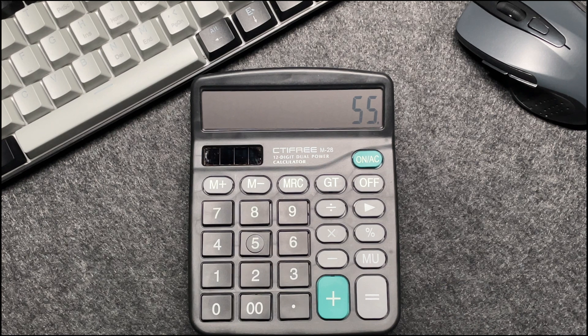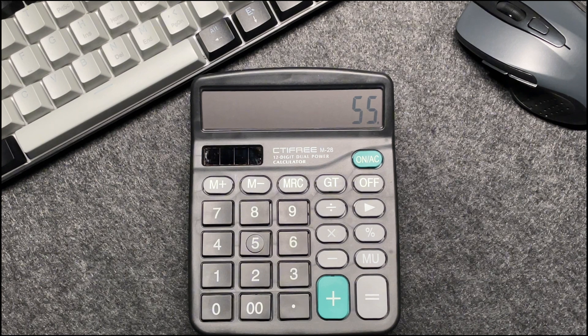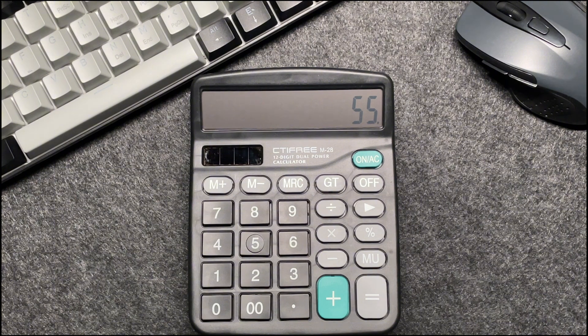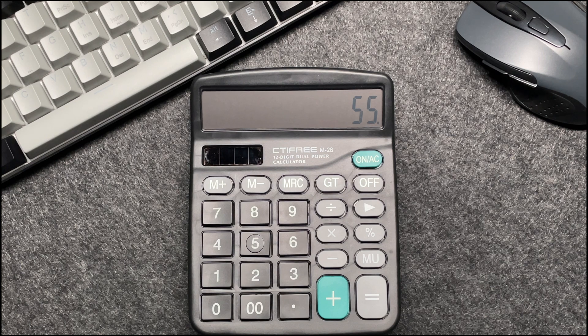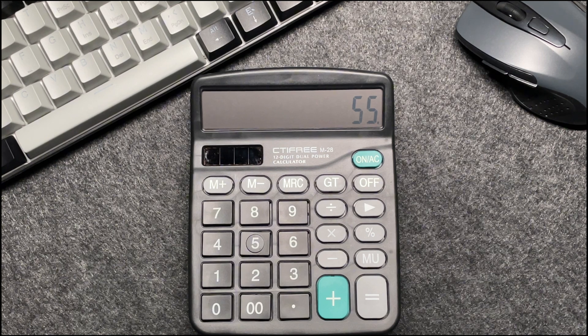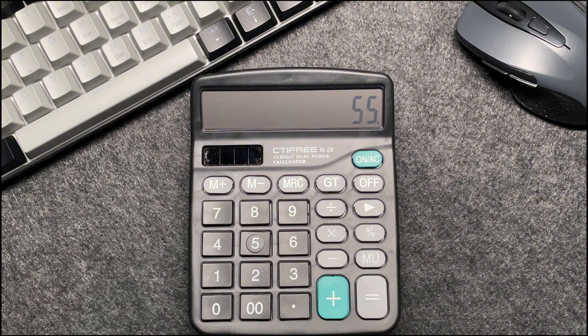Now, you might be wondering, why do we multiply by 55? Let's break it down. When we talk about percentages, the total is always 100%. A 45% discount means you are paying 45% less than the original price.